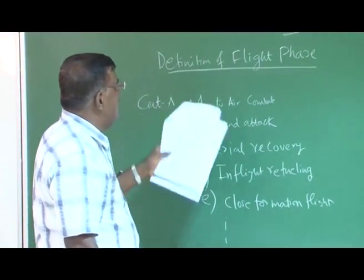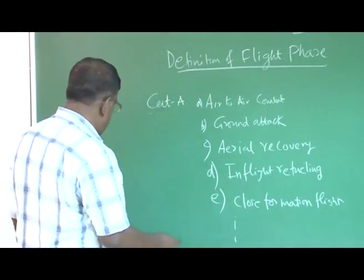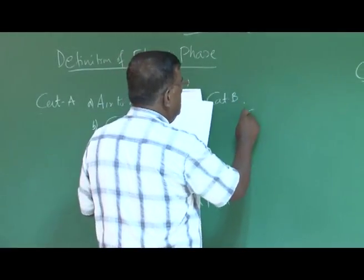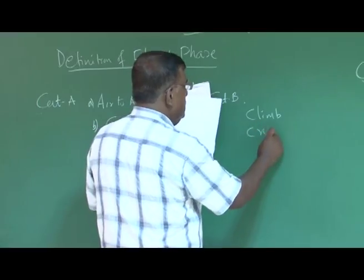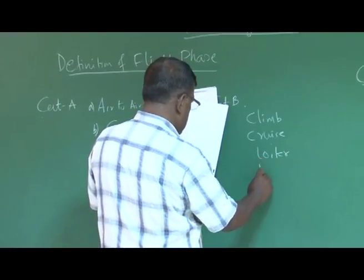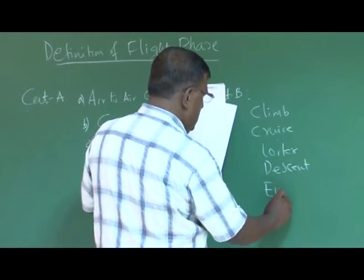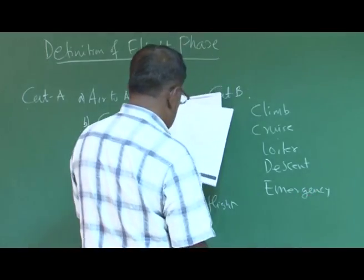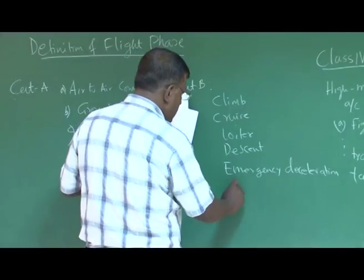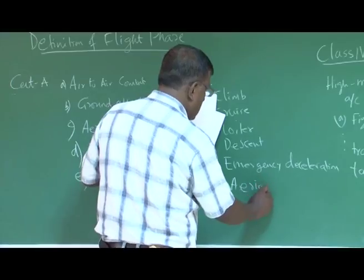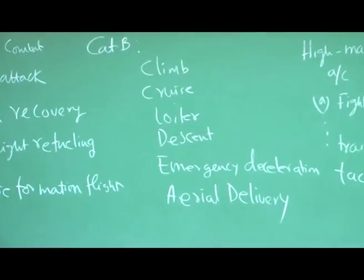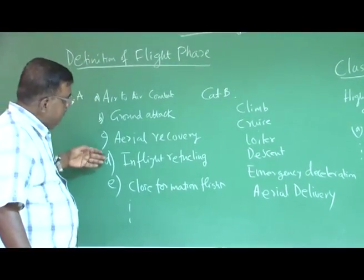Category A defines certain flight phases. We also have category B, which includes flight phases such as climb, cruise, loiter, descent, emergency deceleration, and aerial delivery. These are the flight phases categorized under category B.